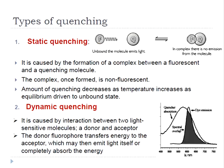In the case of static quenching, it is caused by the formation of a complex between the fluorescent and quenching molecules. In the unbound form, the fluorophore is able to emit light; however, after formation of the complex, the fluorescence is completely quenched and the lifetime is zero. The amount of quenching decreases as temperature increases, as the equilibrium is driven to the unbound state. This complex formation takes place before the excitation of electrons.